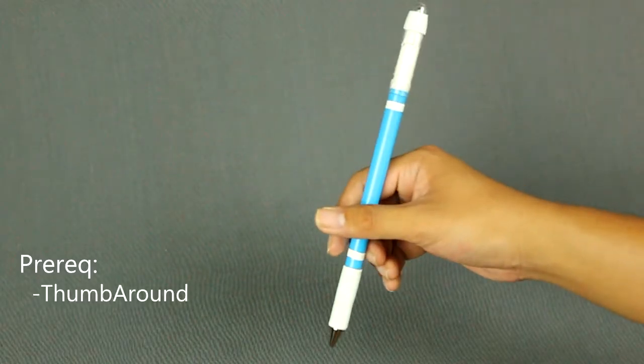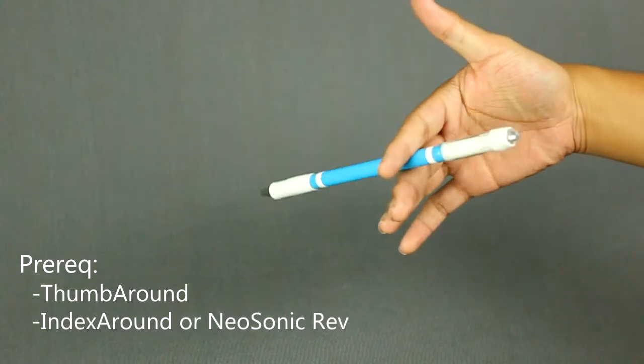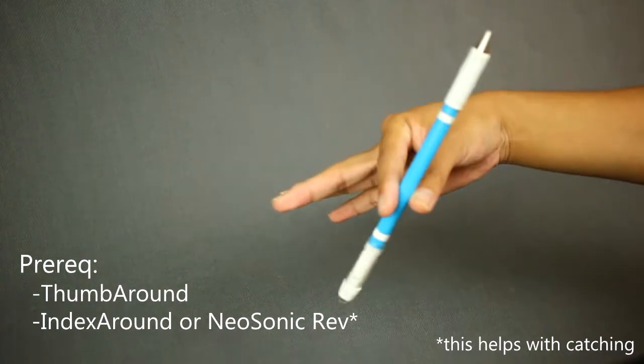The prerequisites are a thumb around with an index push or a wrist flick, and either an index around or a neosonic reverse.